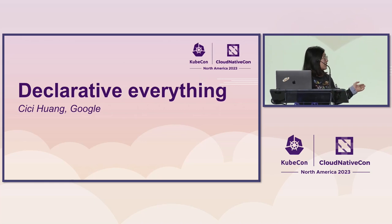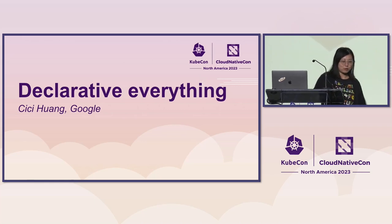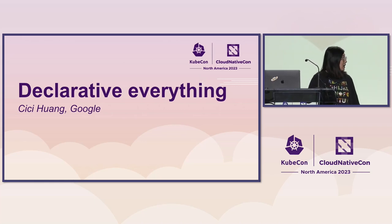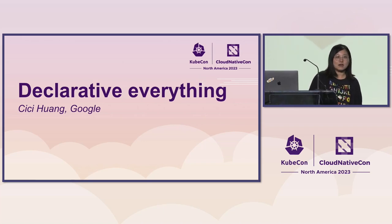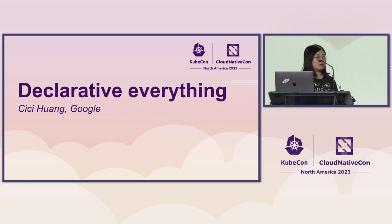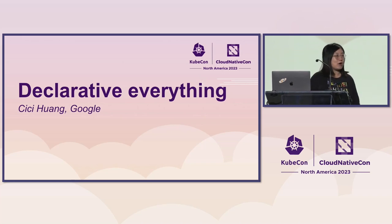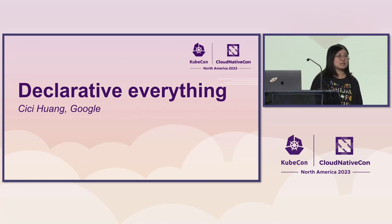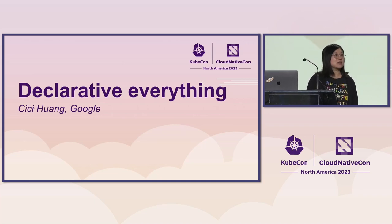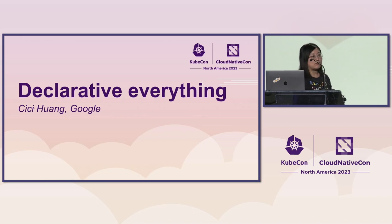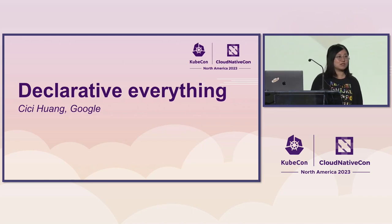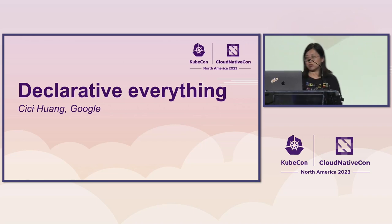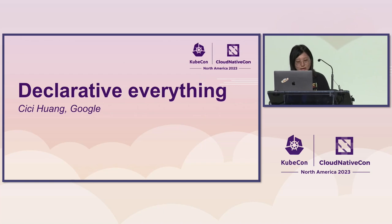I started at SIG Cloud Provider and won the Contributor Award there. Then I released Kubernetes 1.27 as the Release Manager, which is the previous release. I'm also a contributor in SIG API Machinery with the focus on extensible features. Recently, I'm leading the CEL-related work there, which we are going to talk about in our next slides.